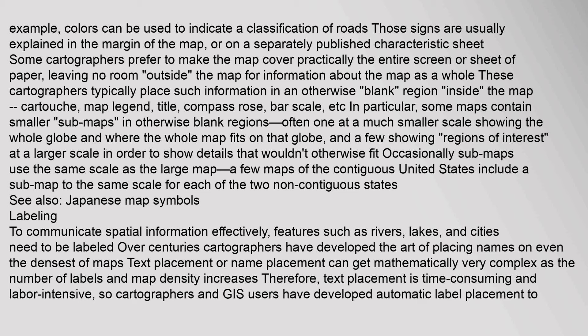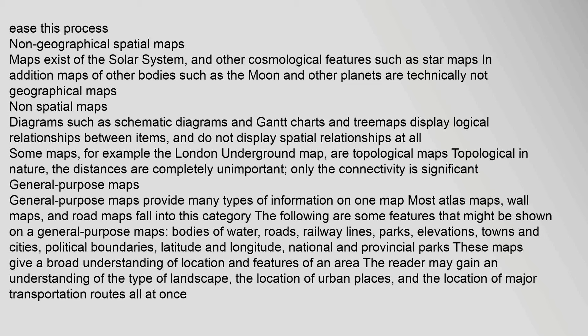To communicate spatial information effectively, features such as rivers, lakes, and cities need to be labeled. Over centuries, cartographers have developed the art of placing names on even the densest of maps. Text placement can get mathematically very complex as the number of labels and map density increases; therefore cartographers and GIS users have developed automatic label placement to ease this process. Maps exist of the solar system and other cosmological features such as star maps. Maps of other bodies such as the moon and other planets are technically not geographical maps. Diagrams such as schematic diagrams and Gantt charts display logical relationships between items and do not display spatial relationships at all. Some maps, for example the London Underground map, are topological in nature — distances are completely unimportant, only connectivity is significant.